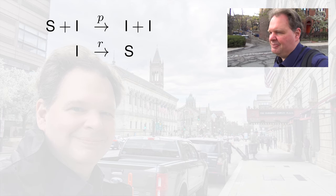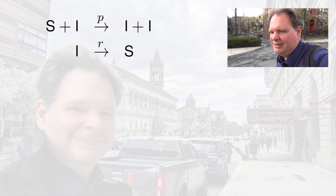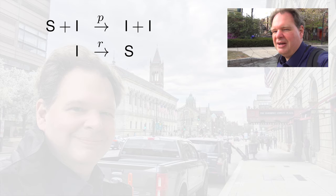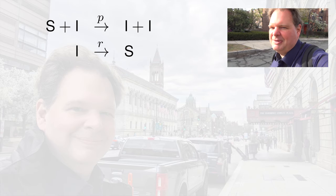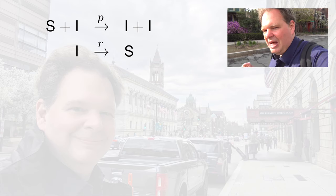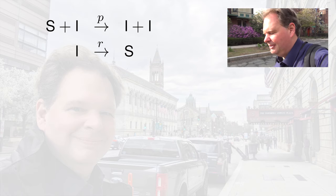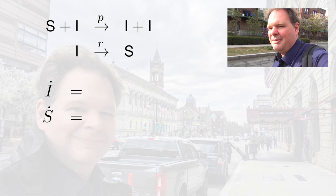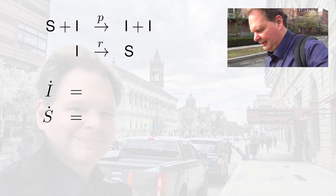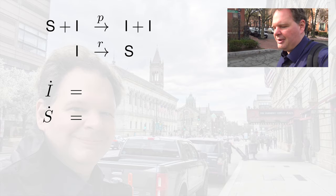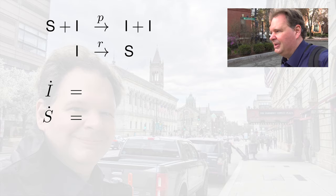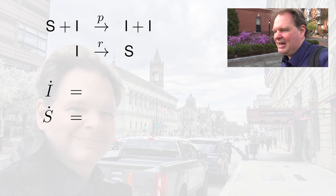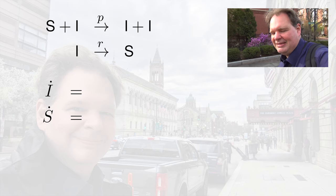The SIS model is described by this reaction diagram. If a susceptible person meets an infected, there's a certain chance p that you come out with two infected. If there's just an infected person, at a certain rate r, they recover and become susceptible again. We now have two variables — susceptibles and infected — so this is a two-dimensional dynamical system. To derive the equations of motion for the two variables, we will translate the reaction diagram into differential equations, following a standard procedure known as the laws of mass action.